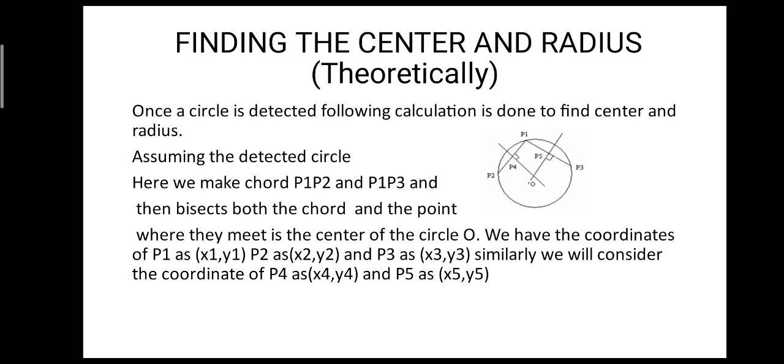So let's see how we are finding the radius and center of the circle theoretically. Let's consider a circle and three points on the circumference named P1, P2, and P3. So let's make two chords out of them: P1-P2 and P1-P3. Let's consider the point P1 as (x1, y1), P2 as (x2, y2), and P3 as (x3, y3).